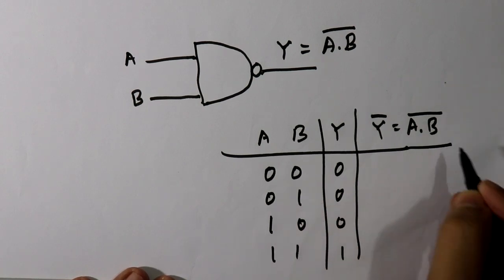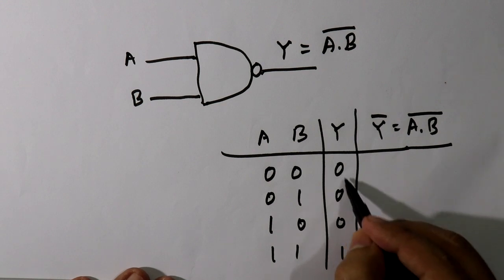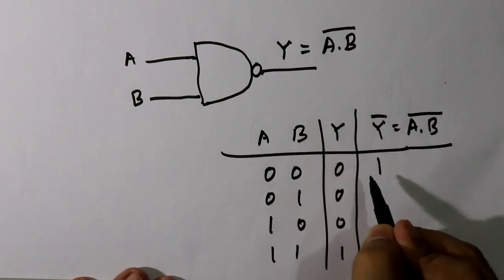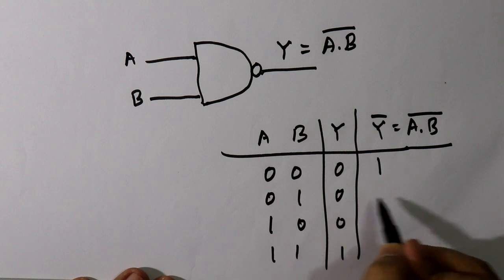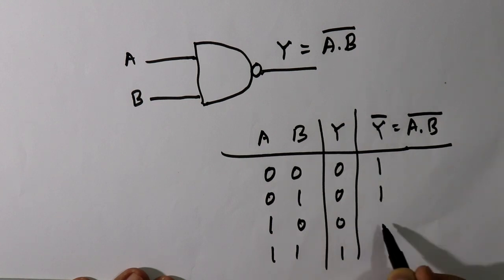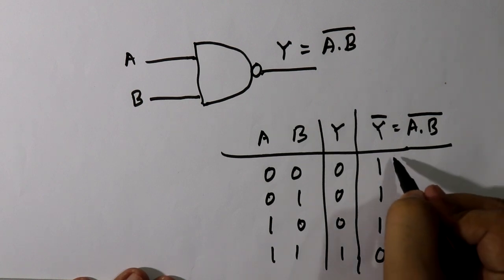Now for the NAND gate we have to make complement of these. So complement of 0 means 1, complement of 0 is 1, complement of 0 is 1, and complement of 1 is 0. So this is our final output.